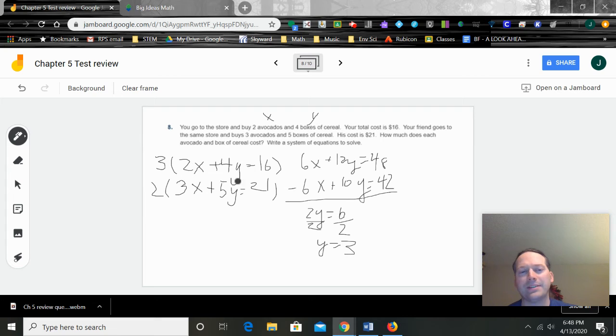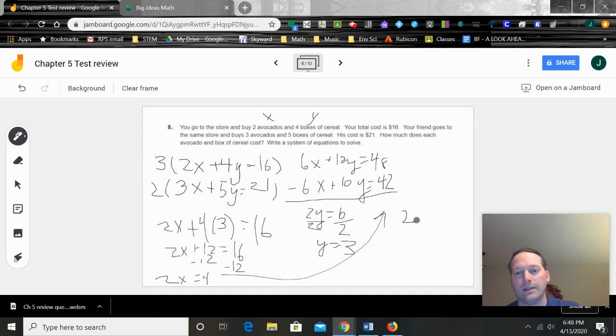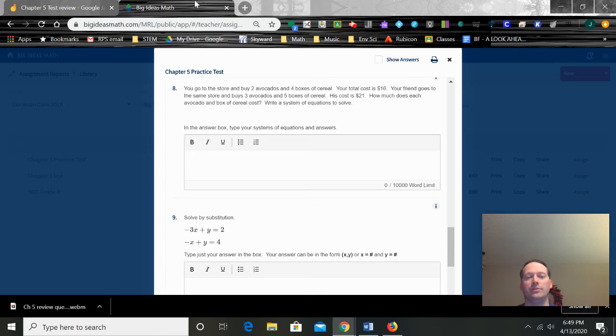Divide by two on both sides. Y is going to be three. Now I just take that and plug it into the first equation just because the number is a little bit smaller. So two x plus four times, now we know y is three, that equals 16. Two x plus 12 is 16. Subtract 12 from both sides. So two x equals four. Divide both sides by two. X equals two.